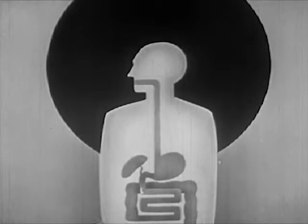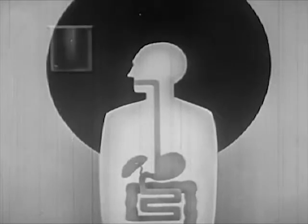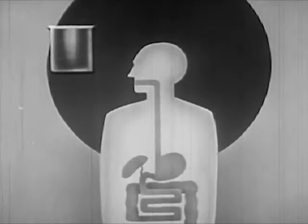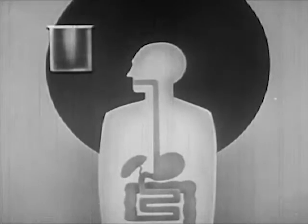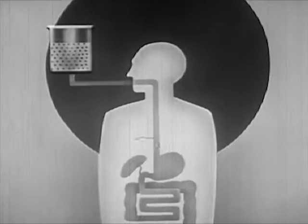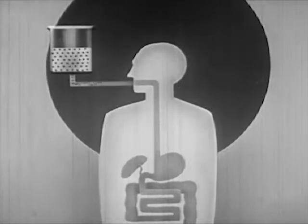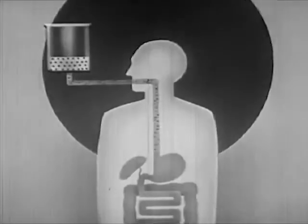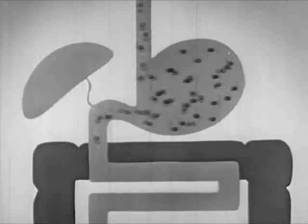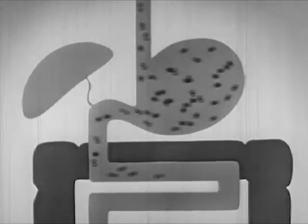By using animated drawings, we will see what happens to alcohol in the body. In the alcoholic beverage shown here, the black dots represent the ethyl alcohol content. The alcohol travels down the esophagus and into the stomach and the small intestine.